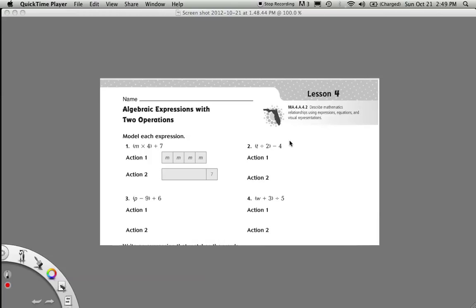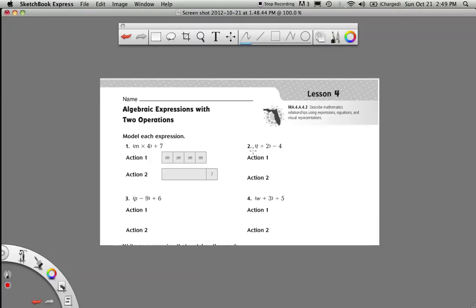We're gonna do this. We're gonna try the same thing over here. We're gonna model t divided by 2 and then subtract 4 from that. So first action, our first thing that we draw is what's in parentheses. We're going to draw t. I'll label it t. I'm going to divide it into two equal parts, split it right down the middle.